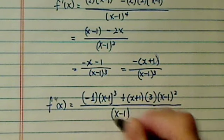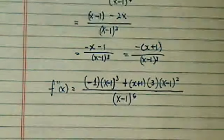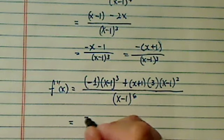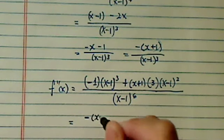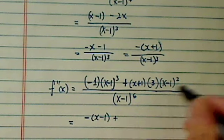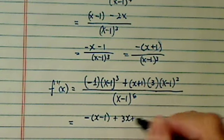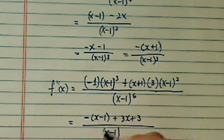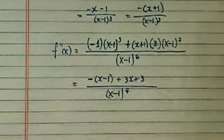And the bottom, I'll have to the 6th power. Clean it up a little bit, so I have a common term, x minus 1. So the first term, I'll have a minus x minus 1, plus a minus 1, so it's 3x plus 3, because this time, which cancels out, x minus 1 to the 4th on the bottom.